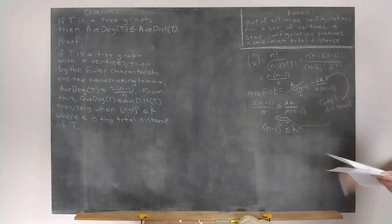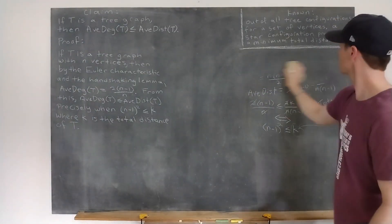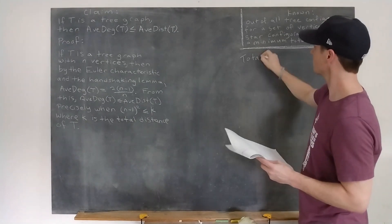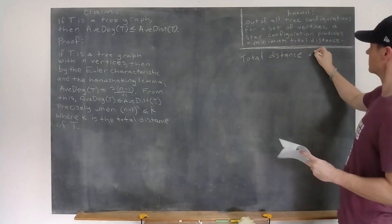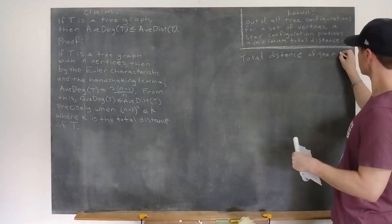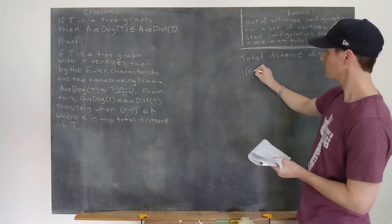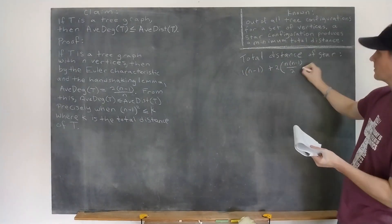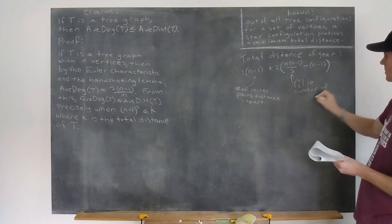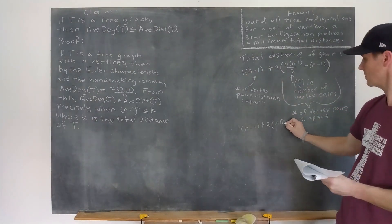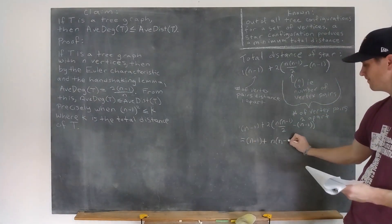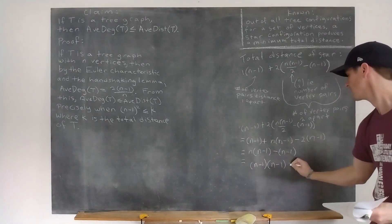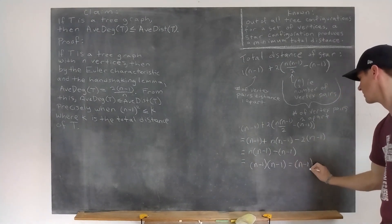Now using our previous result, this value k can't be less than the total distance for a star graph with n vertices. So let's look at that. There are n-1 pairs of vertices, distance 1 apart, the rest being distance 2 apart, according to my calculations, that puts the total distance for a star graph at exactly n-1 quantity squared.